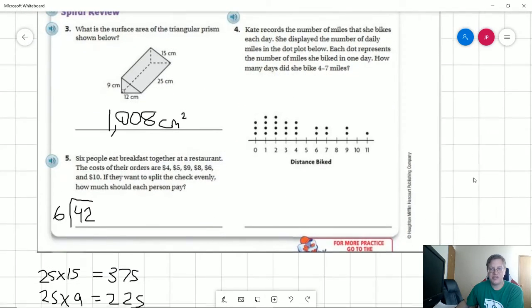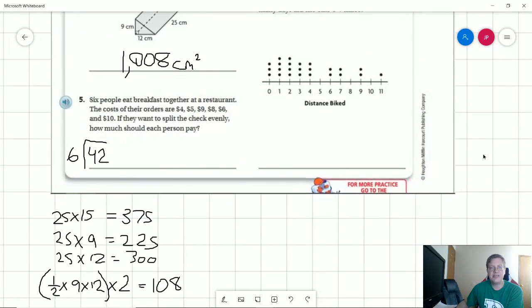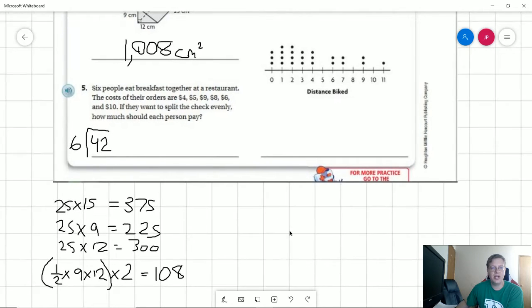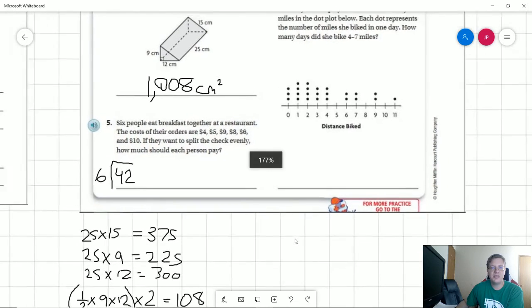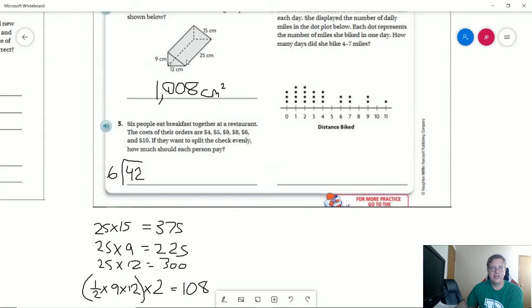Number three, I'm going to scooch down just a little bit. So our answer is 1008 centimeters squared. And so I'm going to zoom out just a little bit to try to get all of this on screen. So we are going to have one instance of multiplying 25 by 15, and that's going to give us this face here.